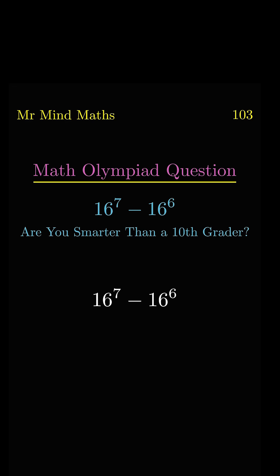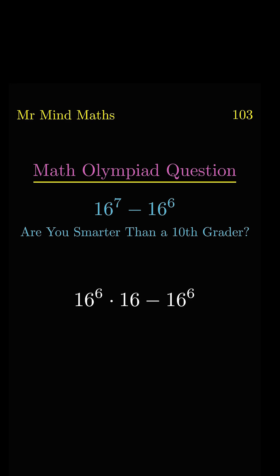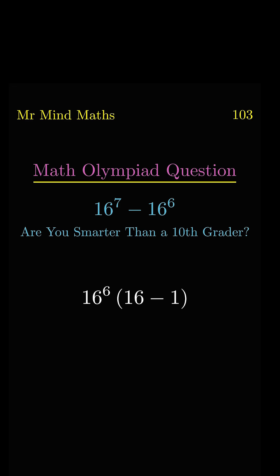First, we will convert 7 power of 16 into 6 plus 1. Now it can be written as 16 power 6 dot 16. Now we will take common 16 power 6. 16 minus 1 is equal to 15.